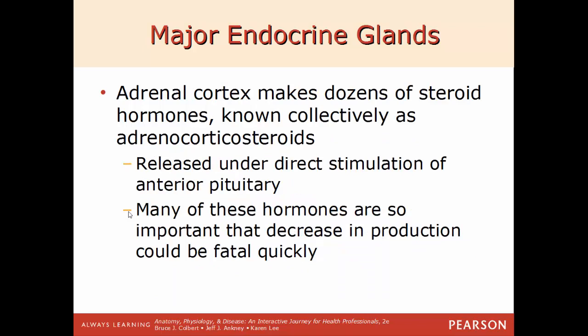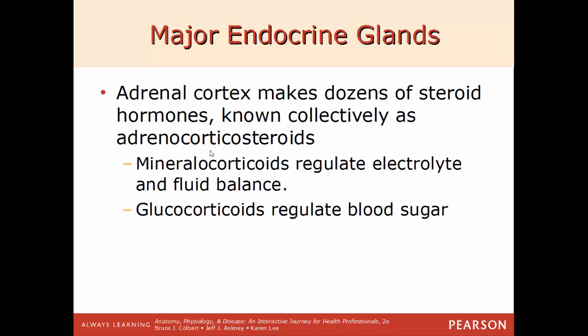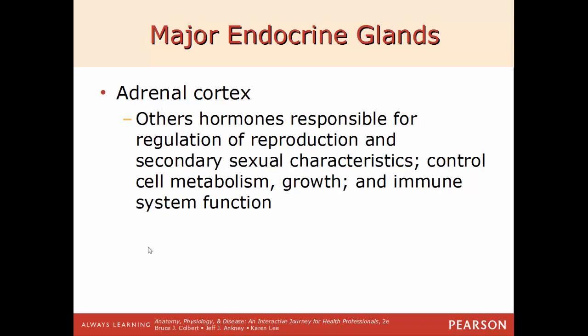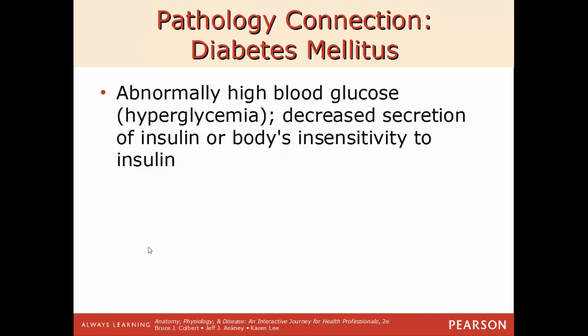The adrenal cortex makes dozens of steroid-related hormones called adrenal corticosteroids. These are released under direct stimulation from the anterior pituitary hormone ACTH (adrenocorticotrophic hormone), which regulates hormone secretion directly from the adrenal cortex. Many of these hormones are so important that you can die fairly quickly if they are not produced at proper levels. Two classes: mineralocorticoids (like aldosterone) help regulate electrolytes and fluid balance; glucocorticoids (like cortisol) help regulate blood glucose. Other hormones from the adrenal cortex regulate cell metabolism, growth, immune system function, and secondary sex characteristics.